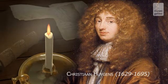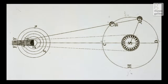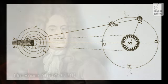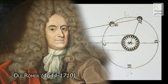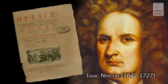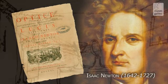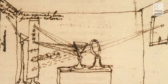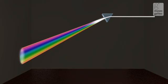The velocity of light, considered infinite for centuries, was estimated with good approximation by Romer in 1676. Newton, whose treatises remained fundamental for the development of 18th century optics, decomposed sunlight into the colors of a spectrum by means of a prism.